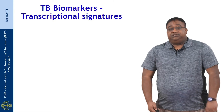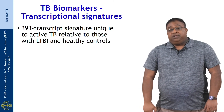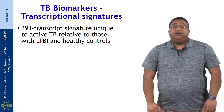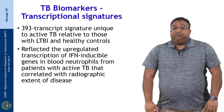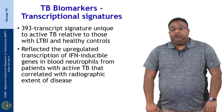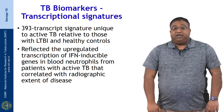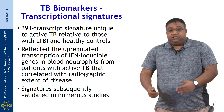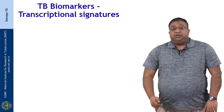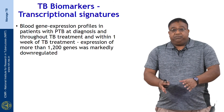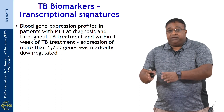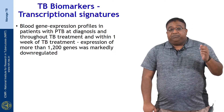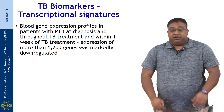In terms of transcriptional signatures, it was initially discovered that there was a 393-transcript signature unique to active TB, which helped distinguish those with active TB from those with LTBI and healthy controls. This signature basically reflected upregulated transcription of interferon-inducible genes mainly in blood neutrophils from patients with active TB, and it correlated with the extent of radiographic disease. This signature has since been validated in numerous studies, and the blood gene expression profile present at PTB diagnosis changes over the course of treatment — within a week of TB treatment there is massive downregulation of more than 1,200 genes in their transcriptional signatures.